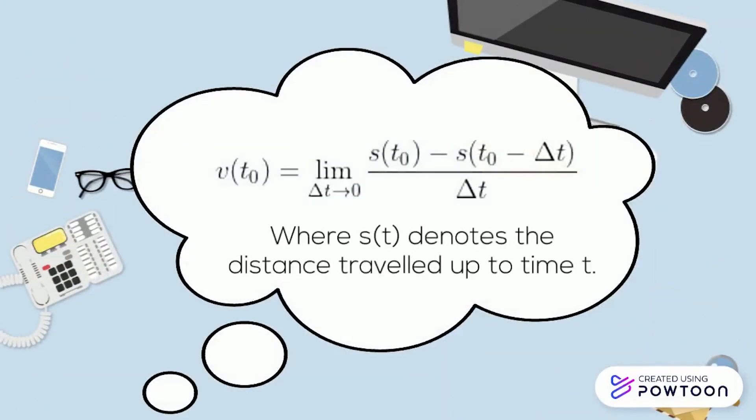So the pattern is v(t0) equals the limit of the function s(t0) minus s(t0 minus Δt) divided by Δt for Δt approaches 0, where s(t) denotes the distance traveled up to time t.